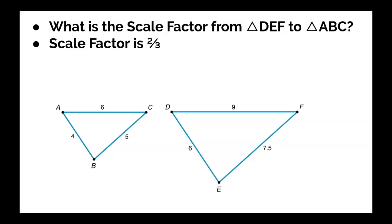And again, when you take those side lengths in DEF, you multiply 9 by 2 thirds to get 6, 6 by 2 thirds to get 4, and 7.5 by 2 thirds to get 5. So, our scale factor, in this case, is 2 thirds.